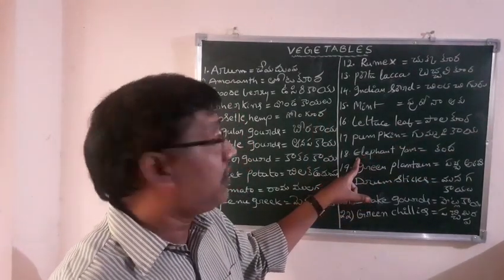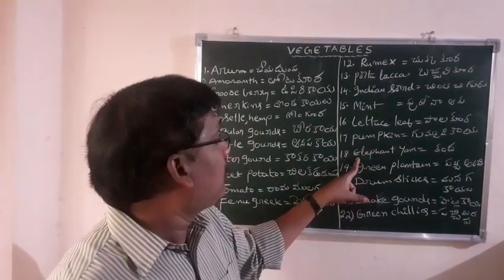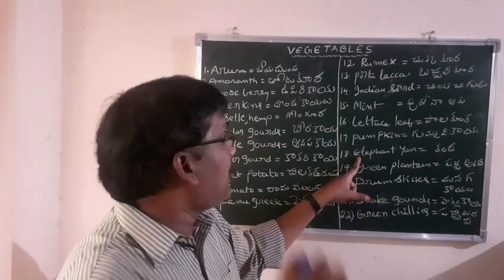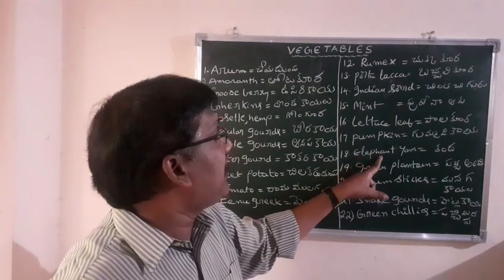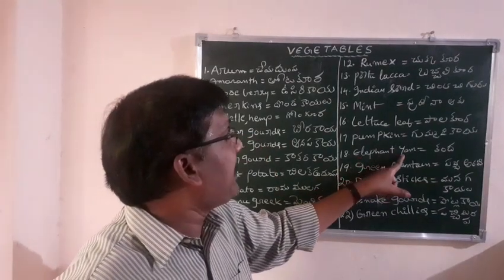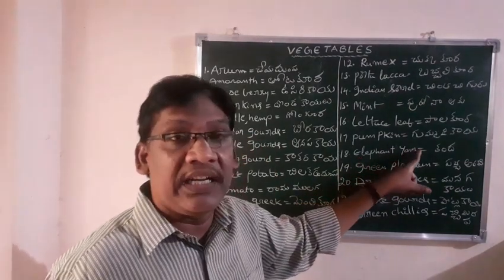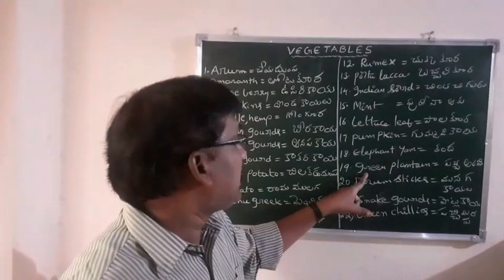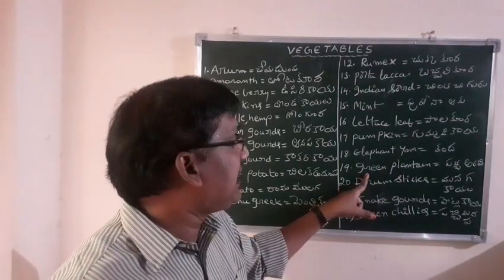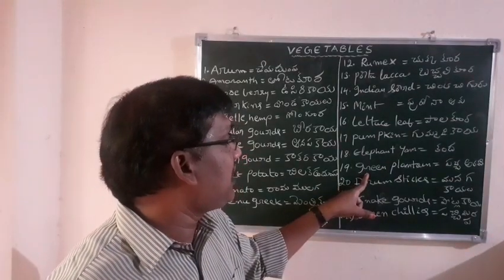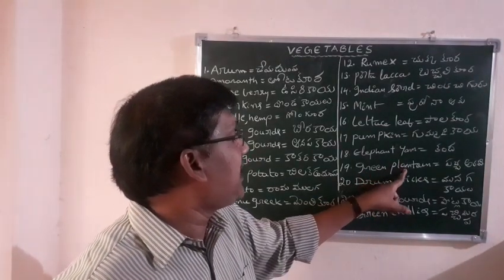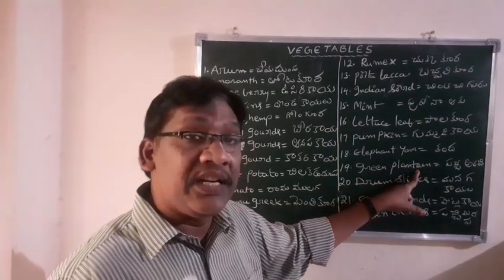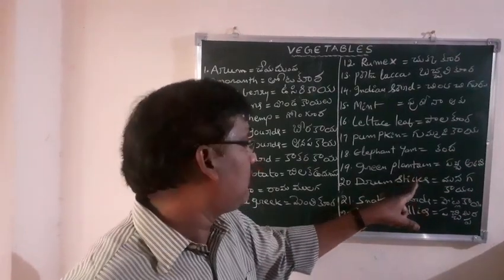18th word: Elephant Yam. E-L-E-P-H-A-N-T Y-A-M. Elephant yam means kanda. Next: Green Plantain. G-R-E-E-N P-L-A-N-T-A-I-N. Green plantain means aratikaya.